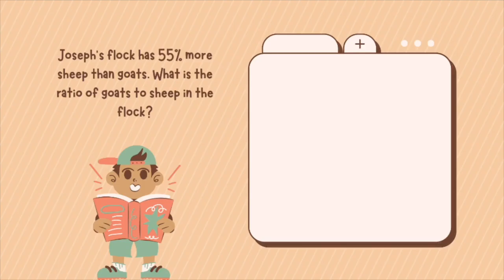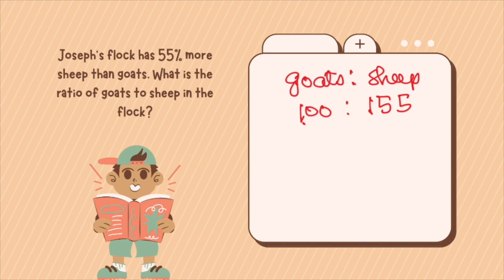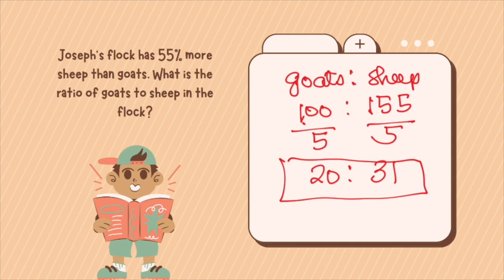Let's have a few examples. Joseph's flock has 55% more sheep than goats. What is the ratio of goats to sheep in the flock? That means, let's say for example, you have 100% of your goat, your sheep will be 155. So that's 100 is to 155. Now you have to simplify this. We will divide this by the greatest common factor, which is 5. 100 divided by 5 is 20. 155 divided by 5 is 31. Therefore, the ratio is 20 is to 31.